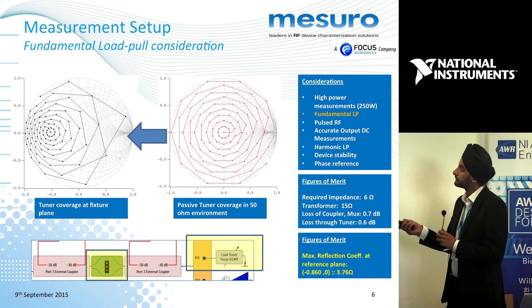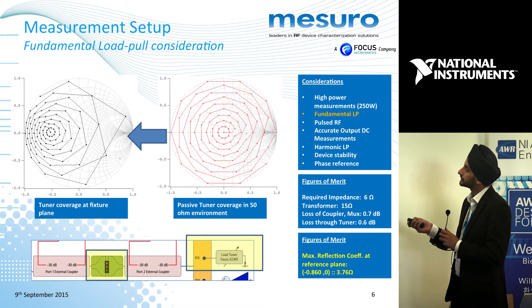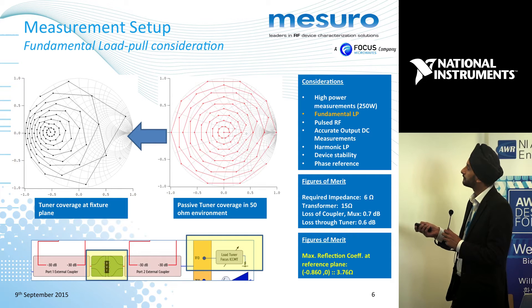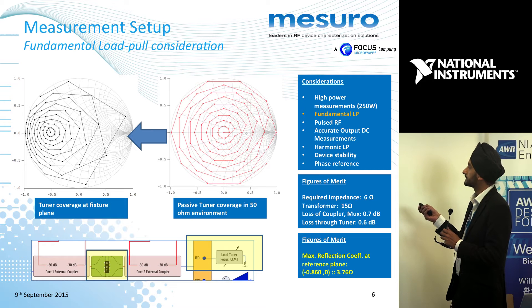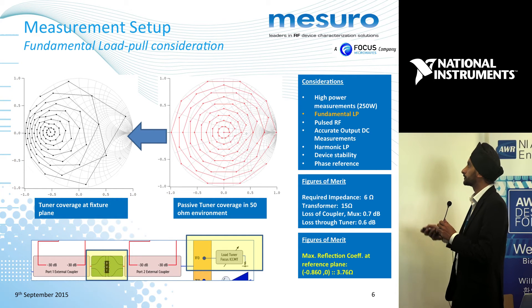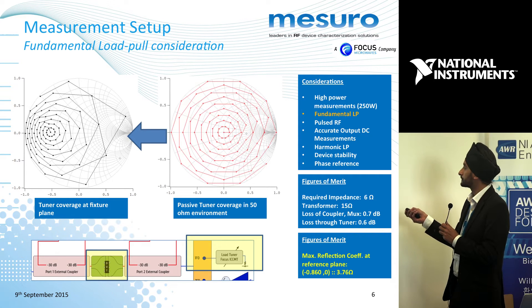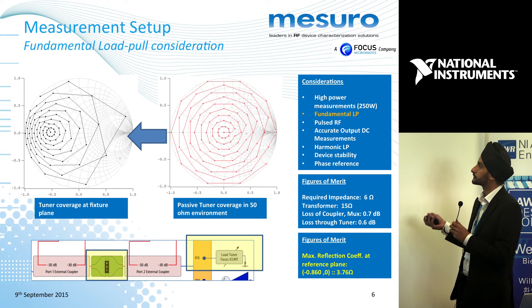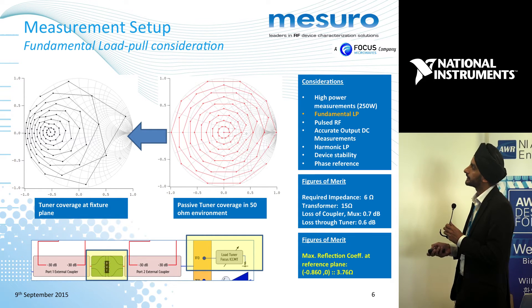If you consider the role of the impedance transformer and where the tuner is placed, we did some calculations and found that the loss of the coupler and the loss of the tuner yielded values of 0.7 and 0.6 dB. I was aiming to get to 6 ohms so that I could close the power contour, and we achieved a maximum reflection coefficient of about 0.86, which was about 3.7 ohms — safely to the right side of the optimum power contour.